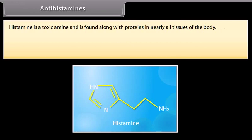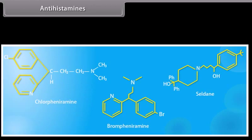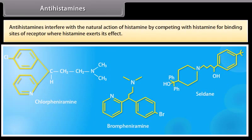Antihistamines: histamine is a toxic amine found along with proteins in nearly all tissues of the body. A number of sensitizing substances called antigens, derived from food products, pollens, dust, human hair, and sheep wool, may cause the release of free histamine in the body, causing symptoms associated with allergies, hay fever, and the common cold. An antihistamine relieves these symptoms by blocking the action of histamine. For example, chlorpheniramine, brompheniramine, and seldane. Antihistamines interfere with the natural action of histamine by competing with it for binding sites on the receptor.